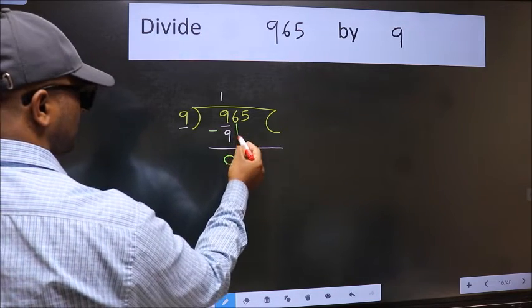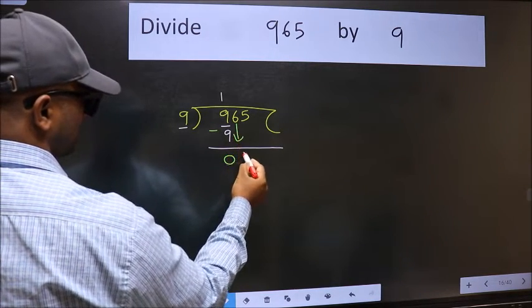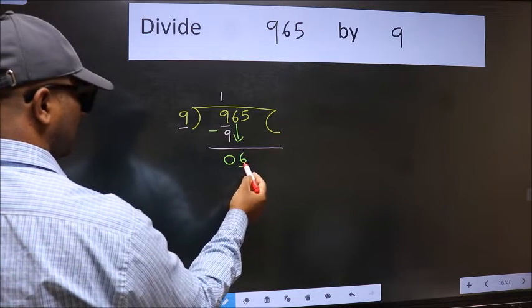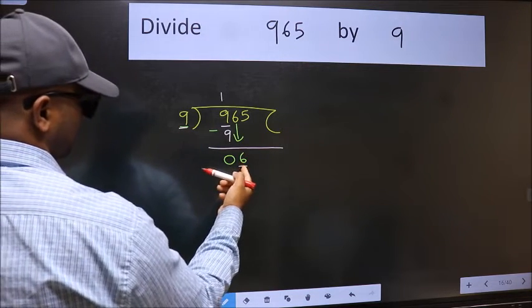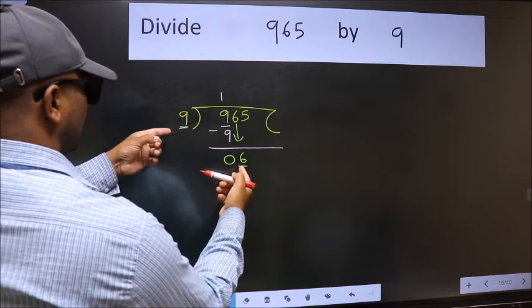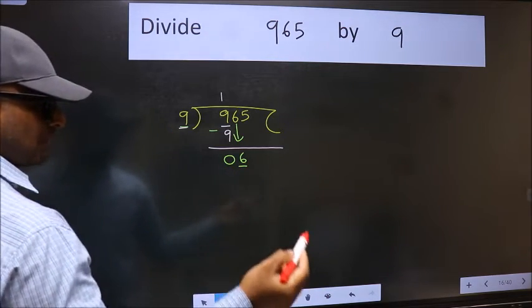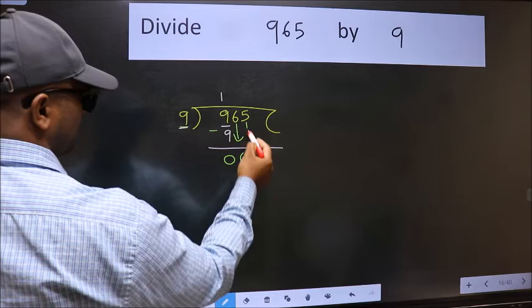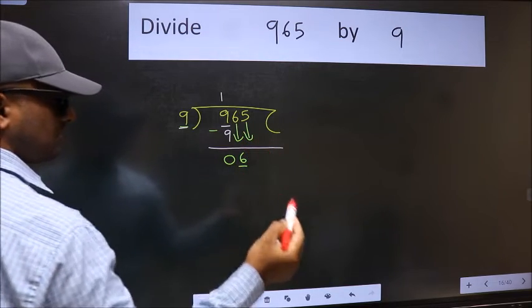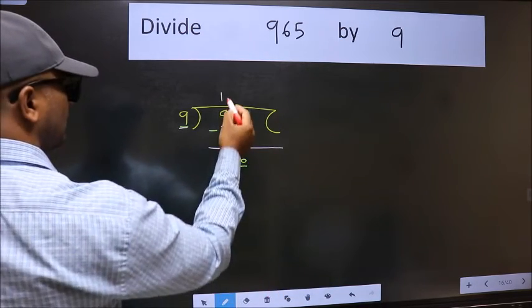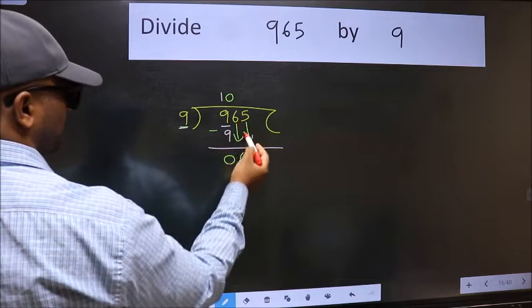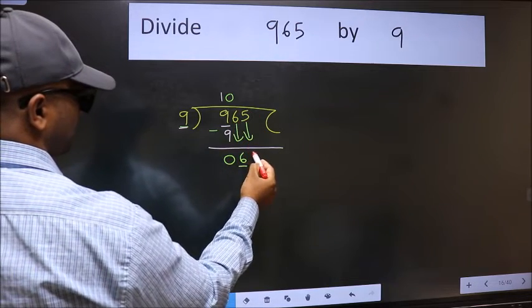After this bring down the beside number. So 6 down. Now here we have 6 and here 9. 6 is smaller than 9, so we should bring down the second number. And the rule to bring down the second number is we should put 0 here. Then only we can bring this number down.